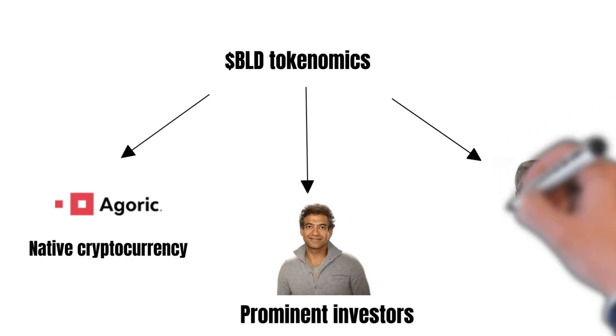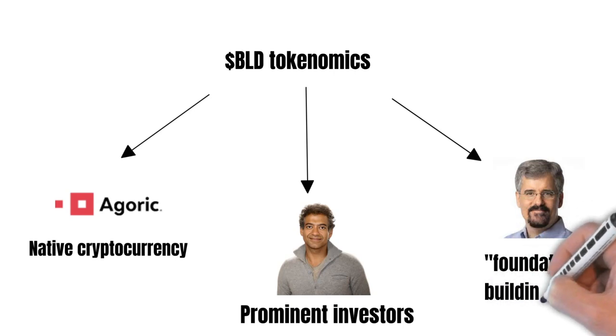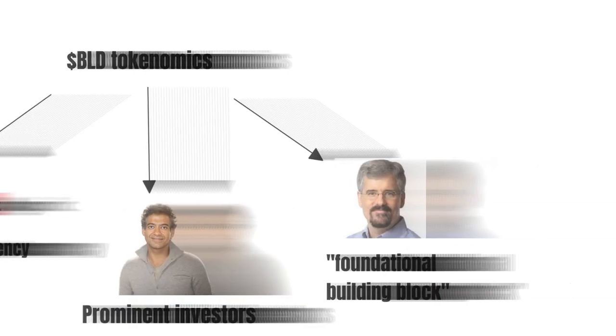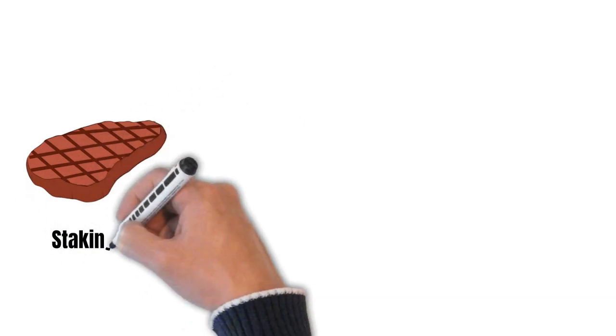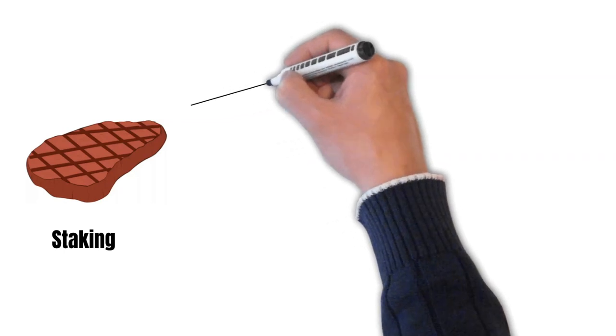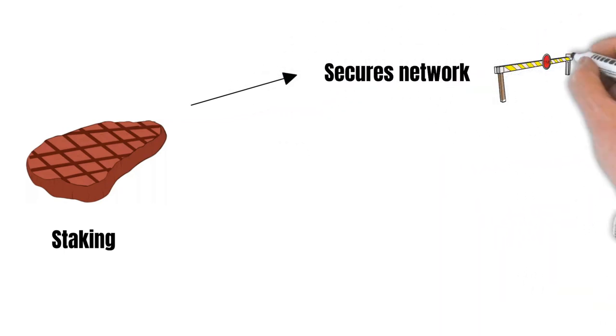Agoric CEO Dean Tribble described the BLD token as the foundational building block of the smart contract platform. Let me explain why. A quick reminder, Agoric uses proof of stake, so investors can use BLD for staking.